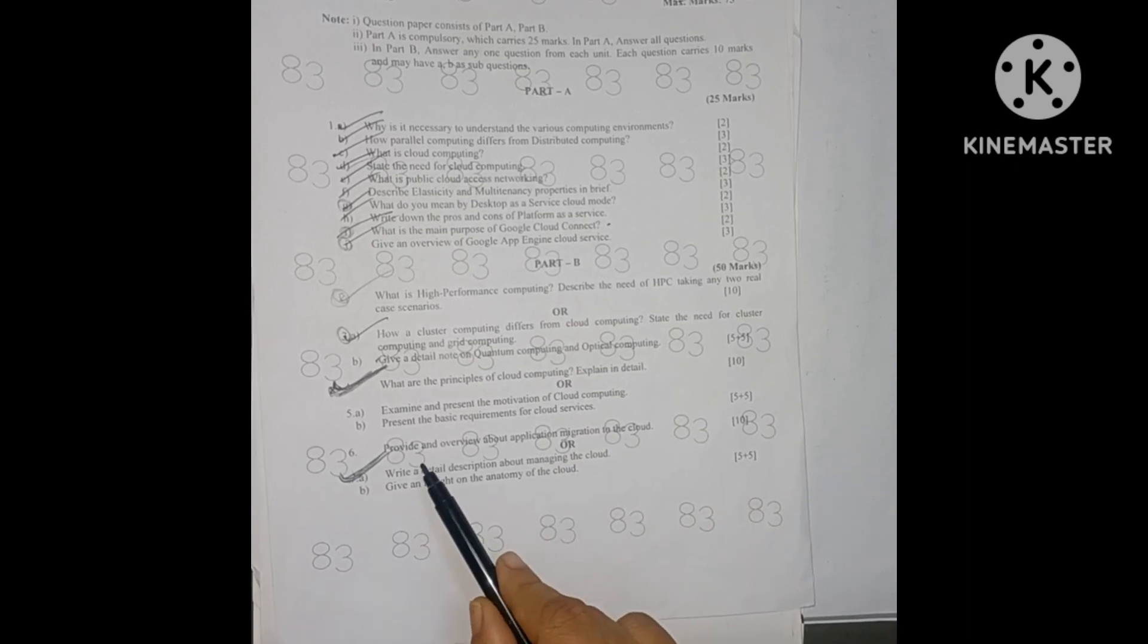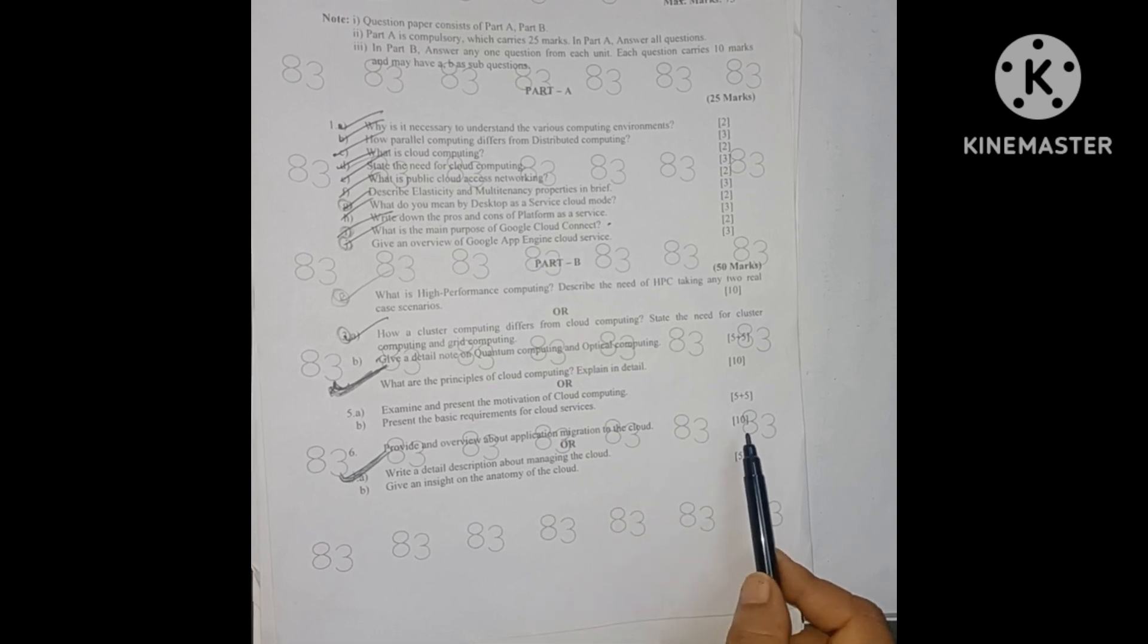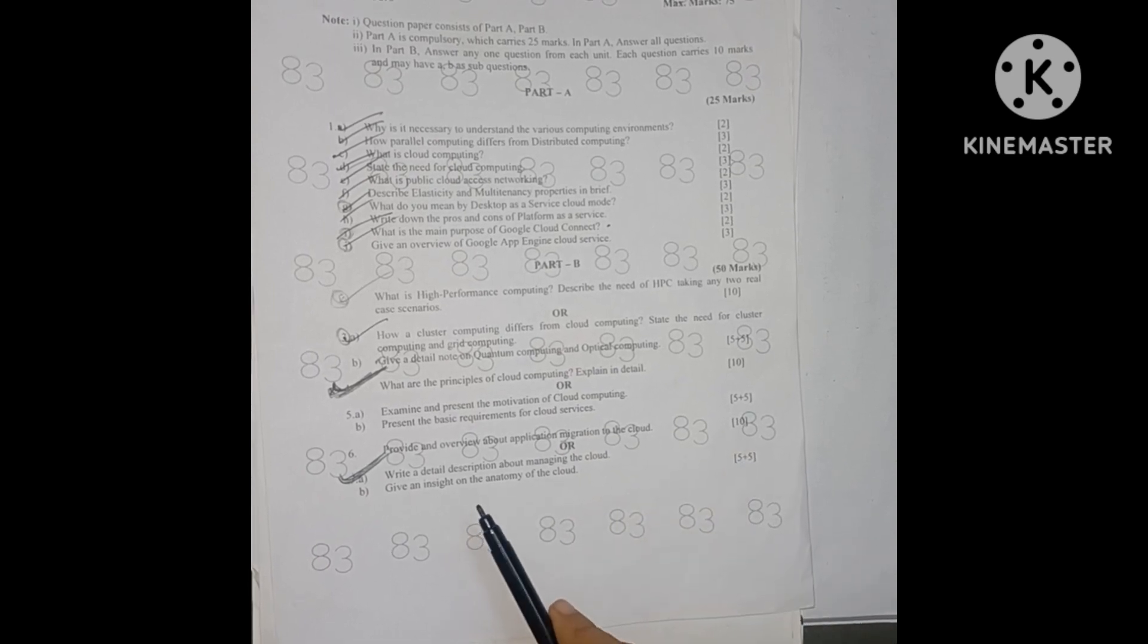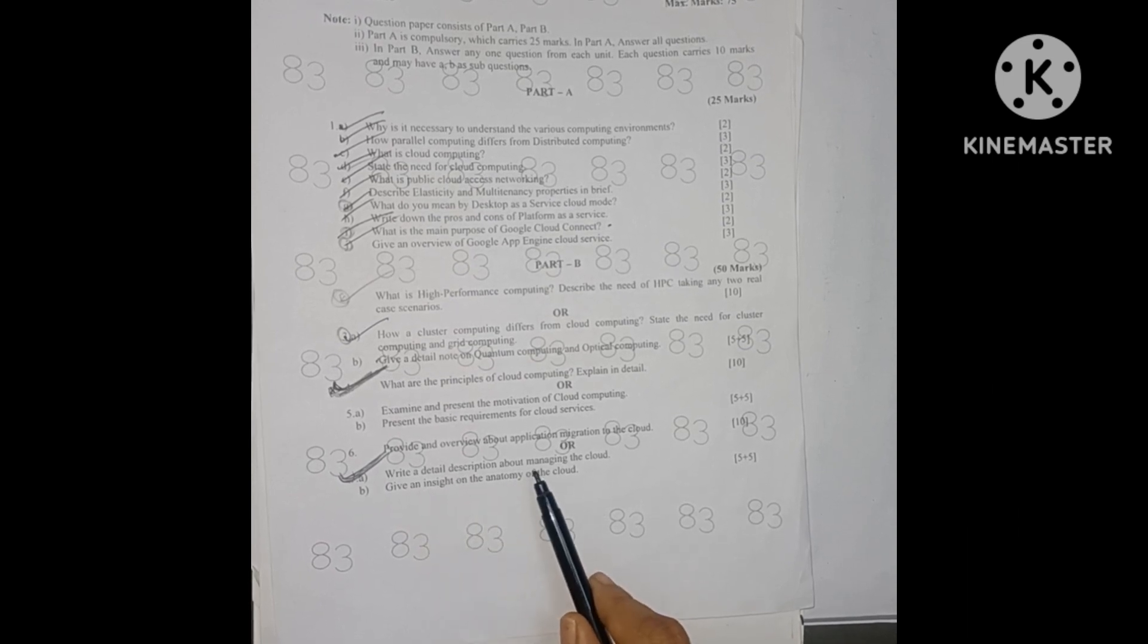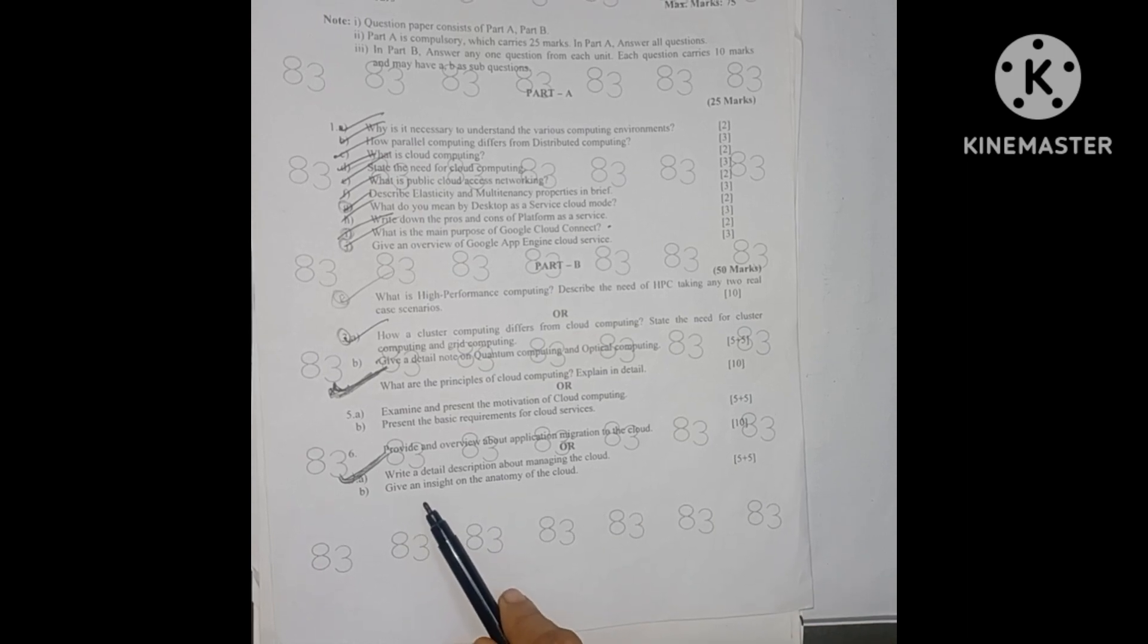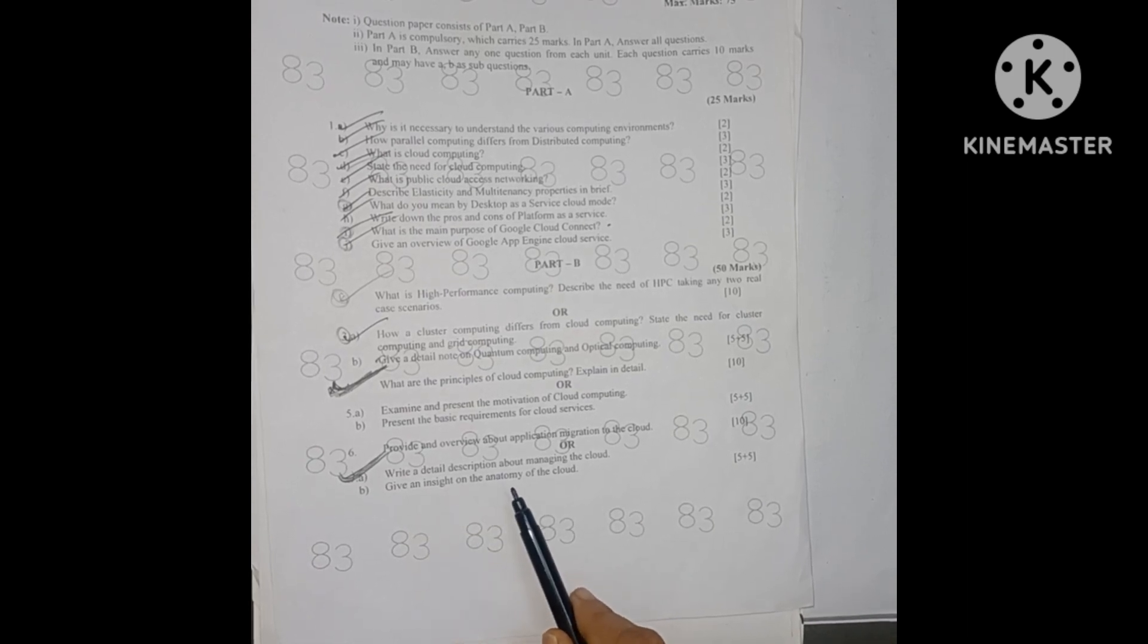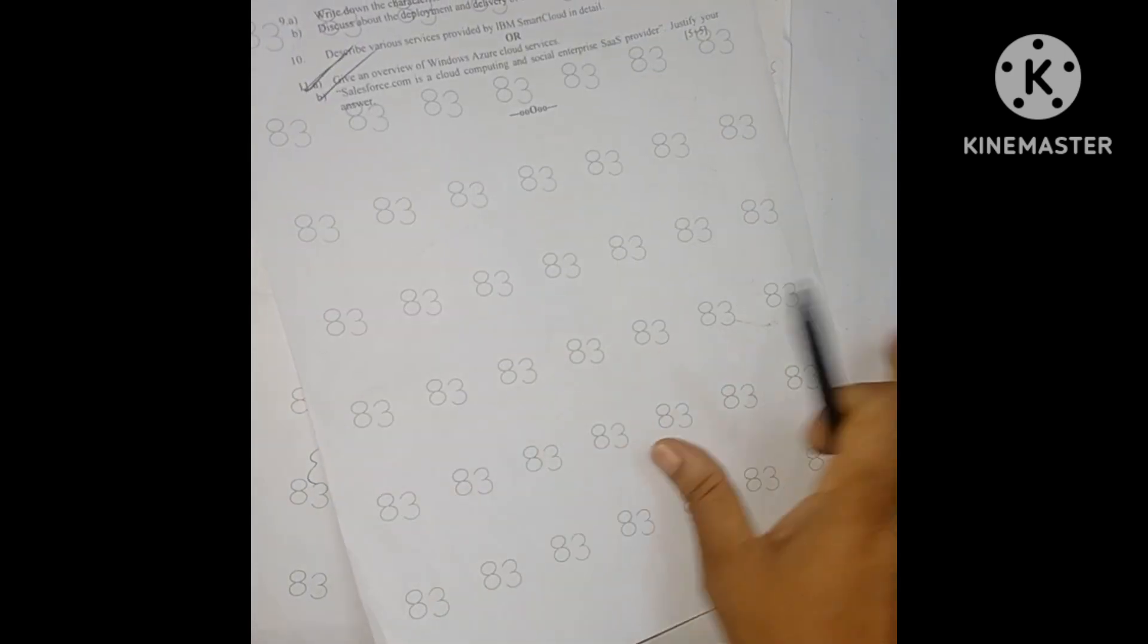Unit 3 is provide an overview about application migration in the cloud, a direct 10 marks question. Internal choice question is write a detailed description about managing the cloud, 5 marks. Part B is give insight on the anatomy of the cloud, 5 marks. These are all questions from unit 3.